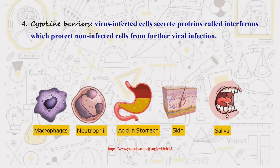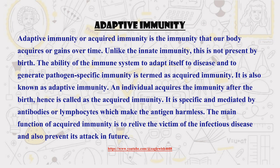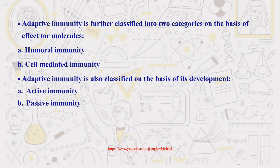But what happens when the innate defenses aren't enough? That's where adaptive immunity comes in. Adaptive immunity is the super smart, highly trained specialist of the immune system — it learns to recognize specific invaders and create long-lasting protection. It relies on specialized immune cells called lymphocytes, T-cells and B-cells, and antibodies. Adaptive immunity can be categorized in two ways: on the basis of effector molecules, and on the basis of its development.